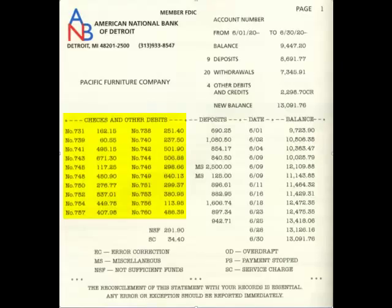Notice that there are some gaps in the sequence — it doesn't go 731, 732, 733, but rather 731 and then it skips to 738. What likely happened is check number 731 was probably written during the month of May, but whoever received that check simply failed to get it to the bank in time. Other checks like 733 and 735 got to the bank, were cashed and processed, and were included on last month's statement.